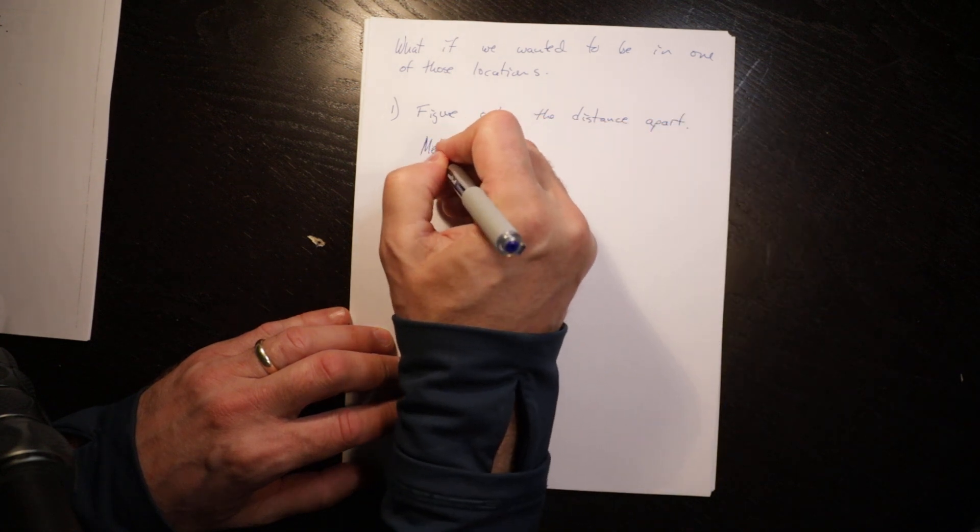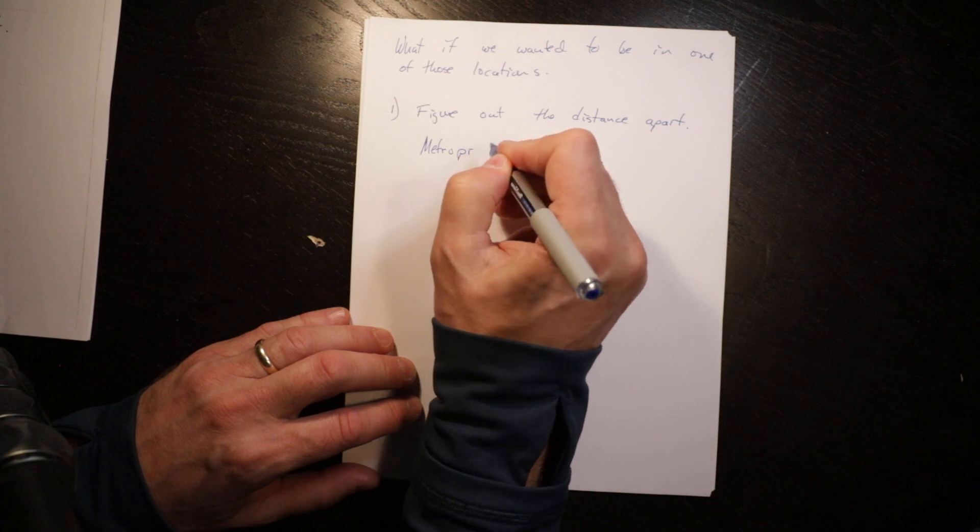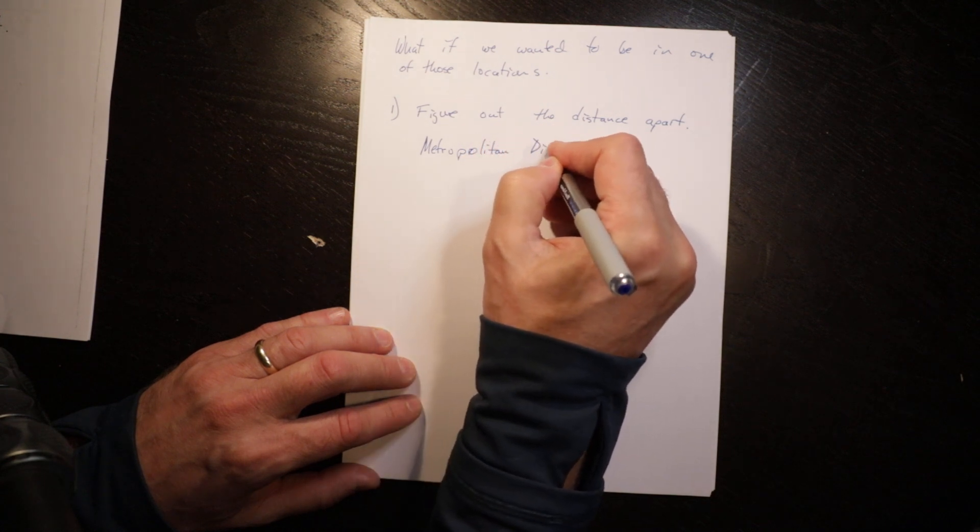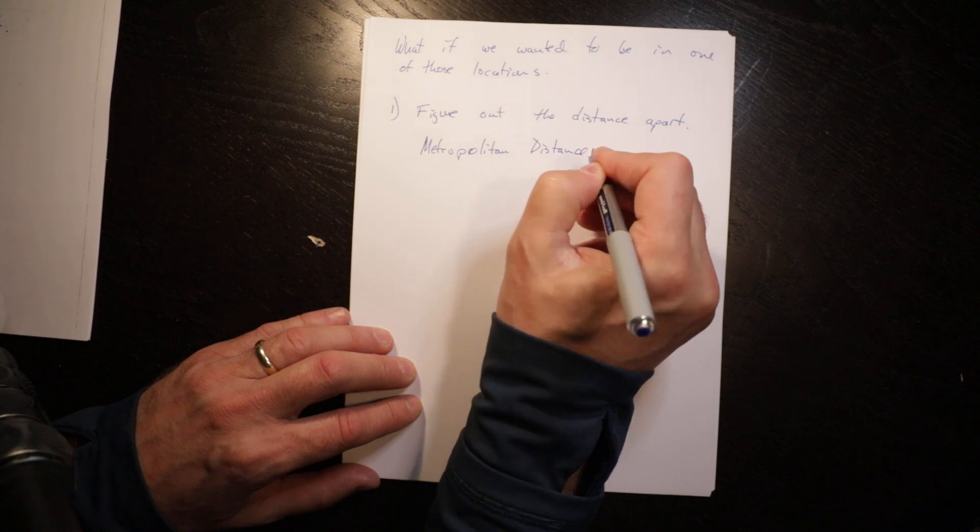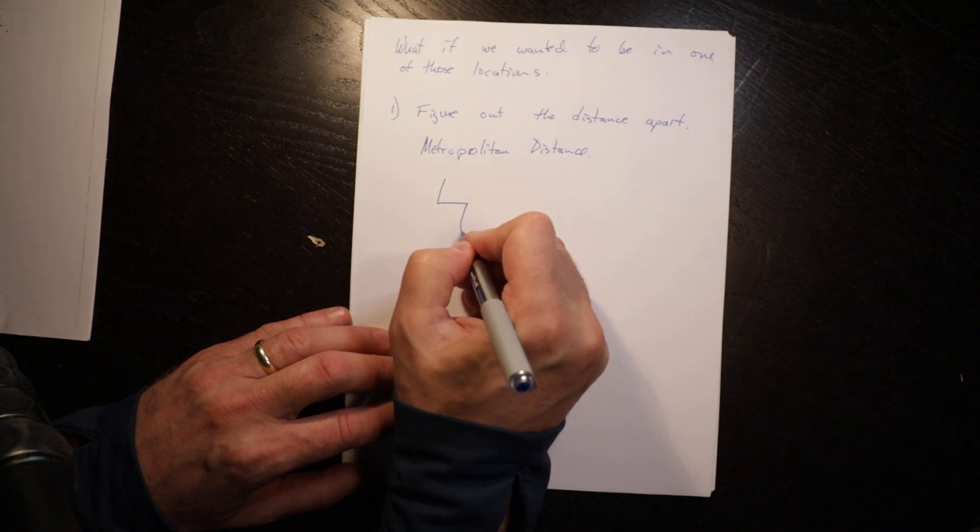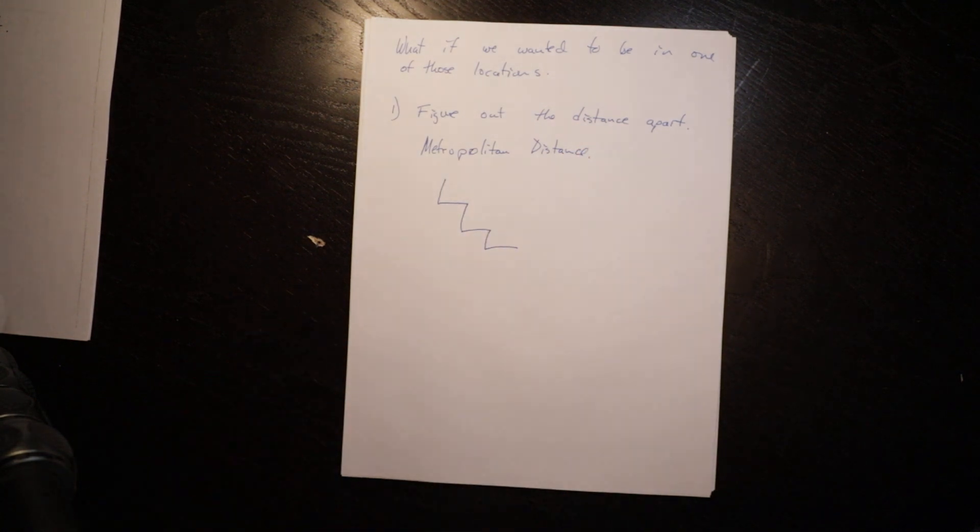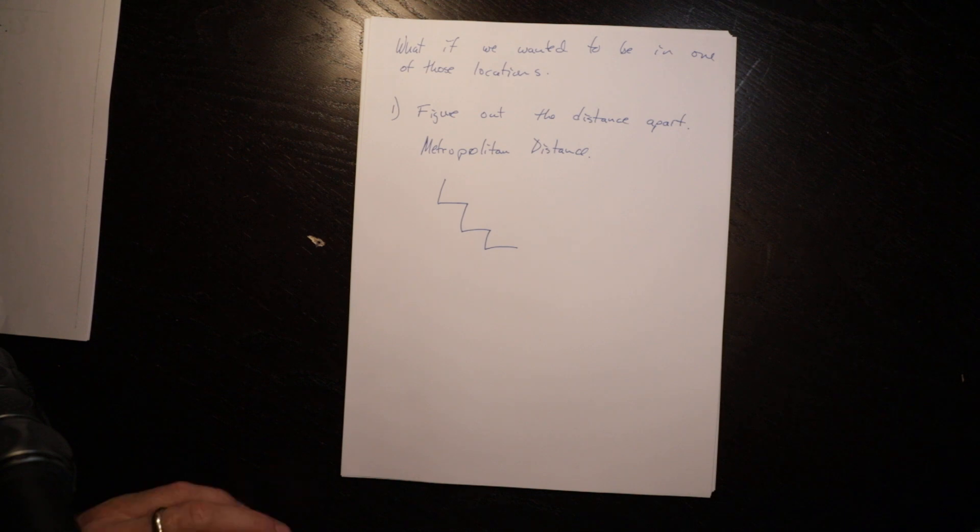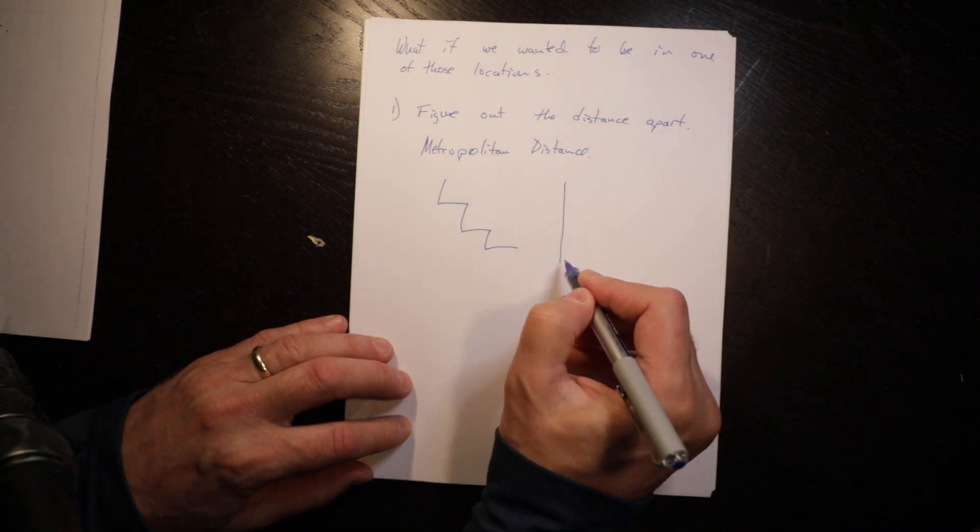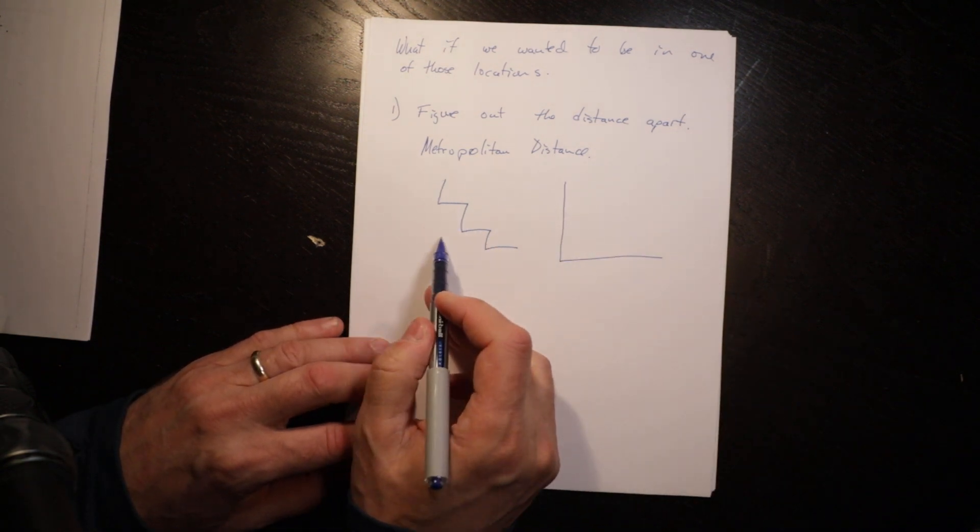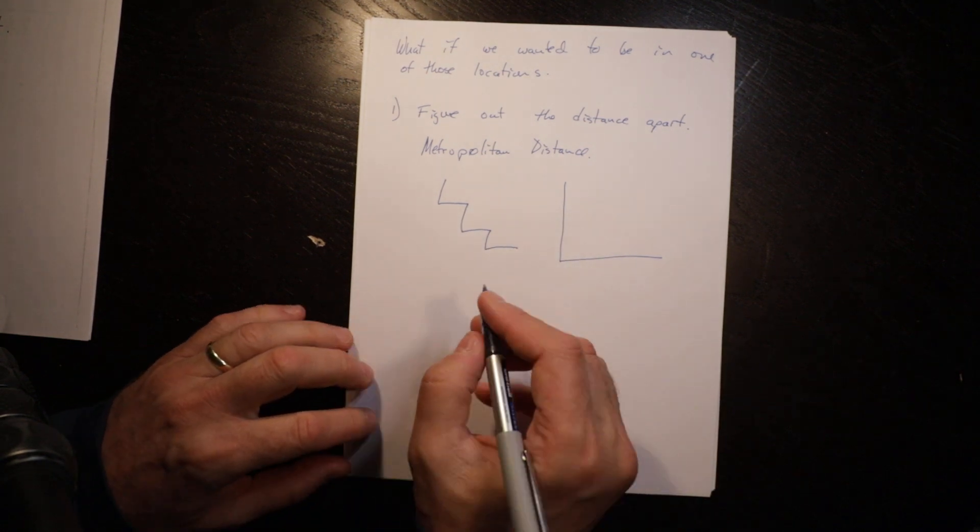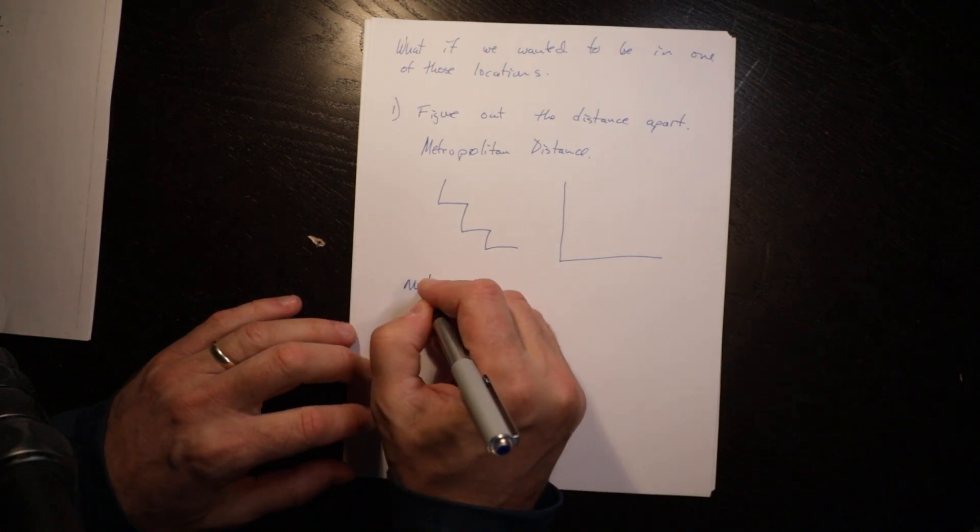The first concept is what's called metropolitan distance. This is at right angles. It's called metropolitan distance because it's right angles, like you're driving in a city and you have to take those grid roads. At right angles this distance is the same as that distance even though we've done it in steps.